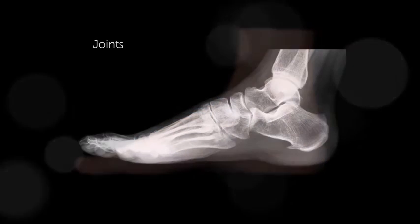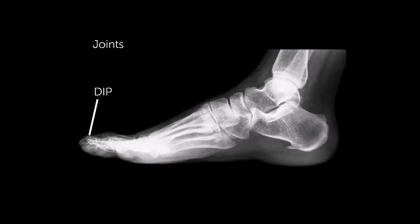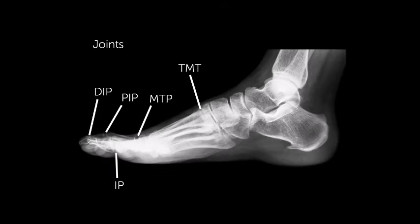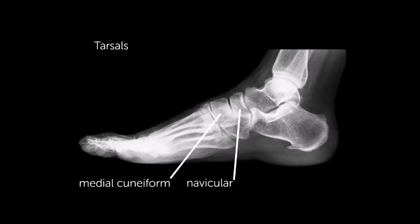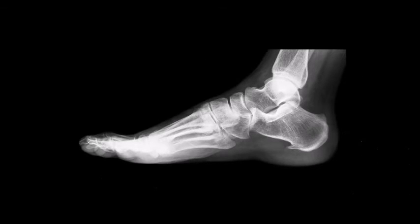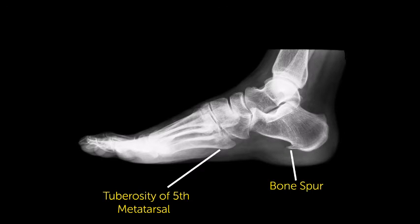In this lateral view of the foot, we are able to have some assessment of the joints of the phalanges; however, they are superimposed on top of one another. We do have good visualization of the tarsal-metatarsal joint spaces and good views of all of the tarsals. The tarsals are seen in profile, including the medial cuneiform, the navicular, and the talus and calcaneus — two of which were not well visualized on the AP x-ray. On the lateral film, we are also able to see the metatarsal in profile and this interesting bone spur on the calcaneus.